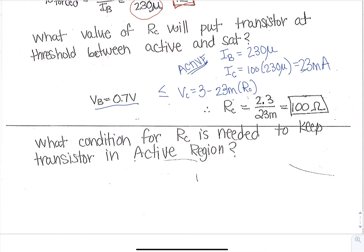So now we can solve this. We can bring the 23 milli times RC over to the other side, and then we have 3 minus 0.7, and we can divide that by 23 milli, and we get 2.3 over 23 milli, and we get a hundred ohms. Again, if we use this exact value, that puts us right on the threshold.